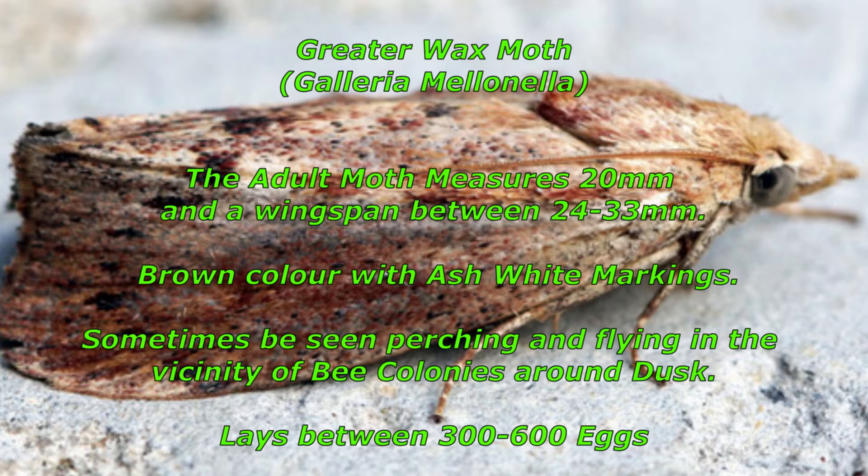Females lay clumps of eggs in crevices within the hive, laying between 300 and 600 eggs, which are pink-cream-white and difficult to see. They hatch after five to eight days into larvae that cause the damage to bee combs. These larvae cannot ingest beeswax directly but eat it and live on the impurities contained therein. As a result, they are generally found in brood comb or any comb containing organic matter.